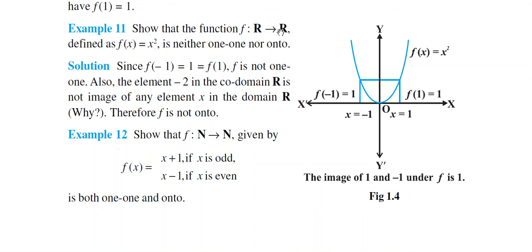You can see that the domain set is the set of all real numbers, and the co-domain set is also the set of all real numbers. The function is defined as f(x) = x². This is the simplest case of a quadratic function. If you plot its graph, it forms an upward concave parabola.